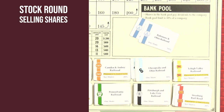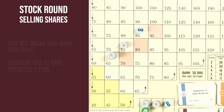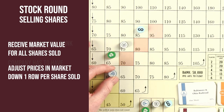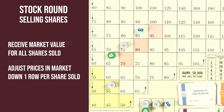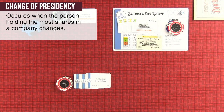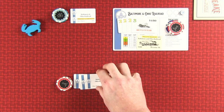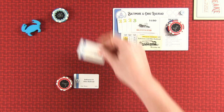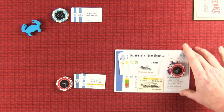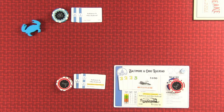Players may sell as many shares of a company as long as it doesn't break the 50% rule, and the company has operated at least once. They receive the market value for all shares sold, and the price drops down one row in the market per share sold, stopping on any ledges encountered. Once you sell a share in a company, you may not buy that company again this round. If this causes someone else to have more shares, they become the new president. In the event two players are tied for the most shares, the person closest to the left of the current president receives the president's share.